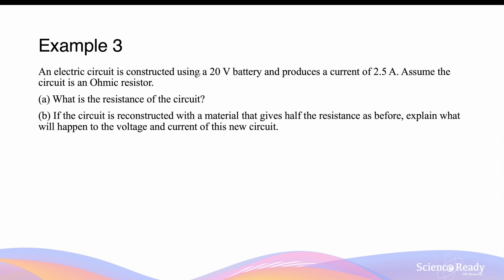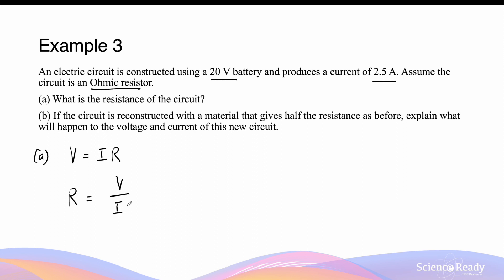An electric circuit is constructed using a 20 volt battery and produces a current of 2.5 amps. Assuming the circuit is an ohmic resistor, what is the resistance of the circuit? Using Ohm's law, V = IR, the resistance equals the voltage divided by the current: 20 volts divided by 2.5 amps gives us a resistance of 8 ohms.